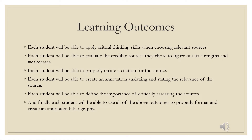Learning Outcomes. As a part of this video, I have compiled a list of learning outcomes that I hope each of you will be able to complete by the end of this video. Each student will be able to apply critical thinking skills when choosing relevant sources, evaluate credible sources to figure out their strengths and weaknesses, properly create a citation for the source, and create an annotation analyzing and stating the relevance of the sources. Each student will be able to define the importance of critically assessing the sources, and finally, use all of the above outcomes to properly format and create an annotated bibliography.